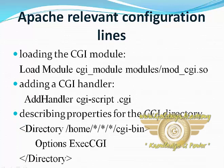This is the Apache relevant configuration for loading the CGI module: LoadModule cgi_module modules/mod_cgi.so — this will load the CGI module. Second, for adding the CGI handler: AddHandler cgi-script .cgi, which adds a CGI handler.